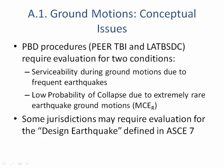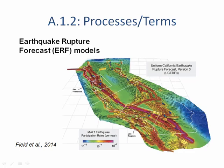Some jurisdictions, like San Diego, require evaluation of the design earthquake as well. Now, how do we come up with the ground motions? We need an earthquake rupture forecast model — this is the UCERF3, the latest edition — which identifies all the sources for seismic activity and defines the slip rates. We use this as a basis for understanding where our ground motions are going to come from.